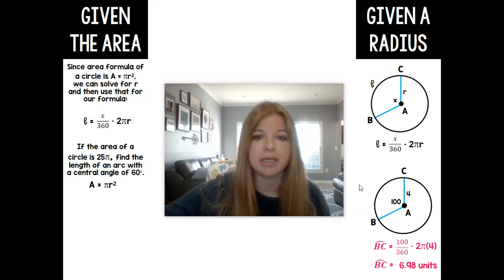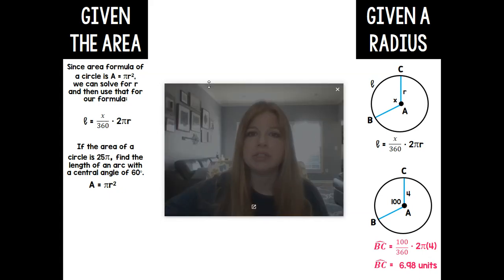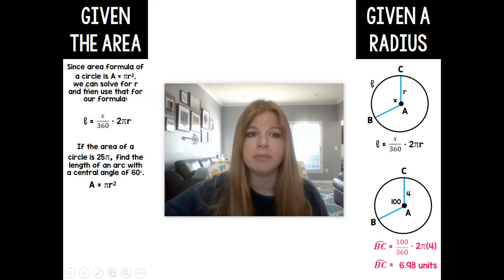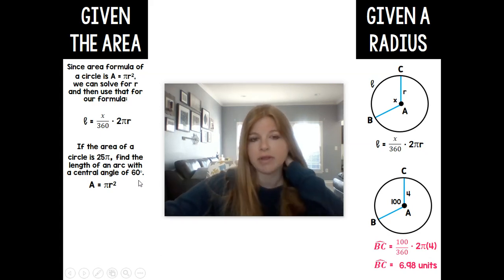If I asked you to calculate the length of an arc and I didn't even give you a circle and I gave you the area, here's what this would look like. It says, since area formula of a circle is πr², we can solve for r and then use that for our formula. So if I gave you an area of a circle and I told you the area of a circle was 25π, it says find the length of an arc with a central angle of 60 degrees.